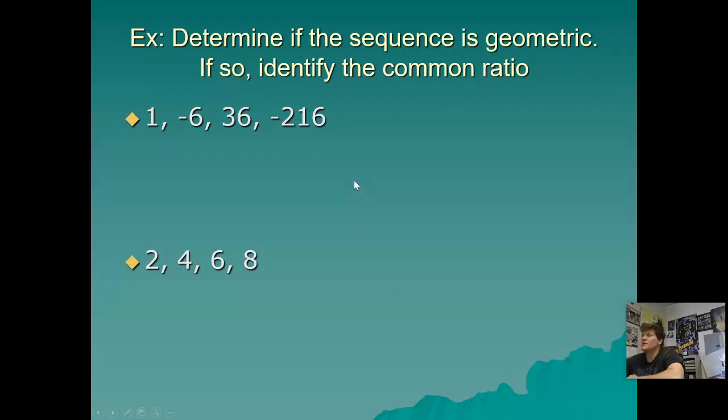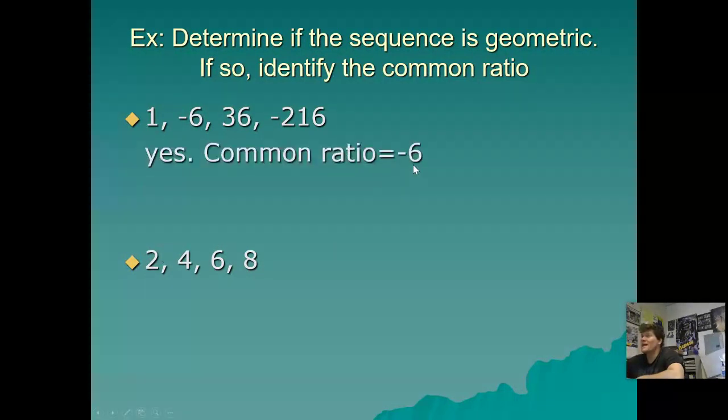So take a look at this quick example to just remind us. Determine if it's geometric, and if so, identify the common ratio. You have 1, negative 6, 36, negative 216. This is geometric because it's multiplying by negative 6 every time. Take a look at this next one. You have 2, then 4, then 6, then 8. This is not geometric. There's no common ratio. There's a common difference. If it's arithmetic, you're adding 2 every time. So quick reminder.